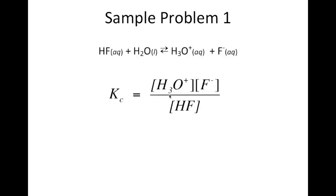For the second example, this is a heterogeneous equilibrium. The Kc expression is products divided by reactants. All coefficients are one, so there are no exponents. The numerator is the concentration of hydronium ion times the concentration of fluoride ion — both aqueous, so we include those. The denominator is the concentration of hydrofluoric acid, which is aqueous. Water is a pure liquid, so we do not include it.